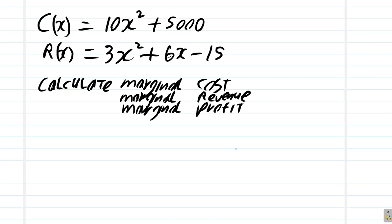We want to find the marginal cost, marginal revenue, and marginal profit, given that the total cost function is 10x squared plus 5000, and the total revenue is 3x squared plus 6x minus 15.